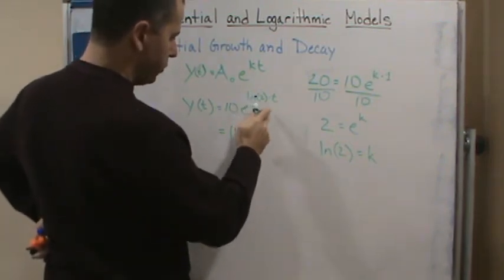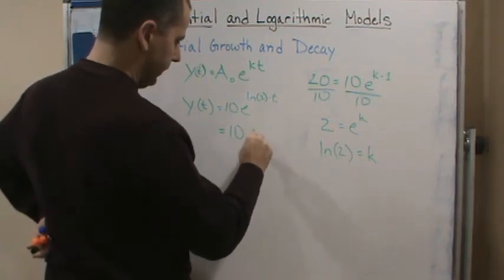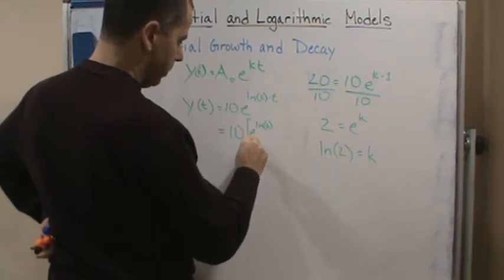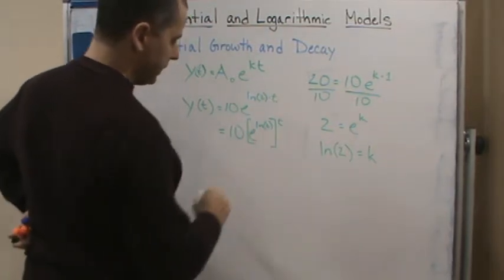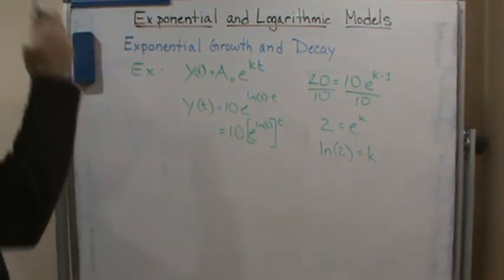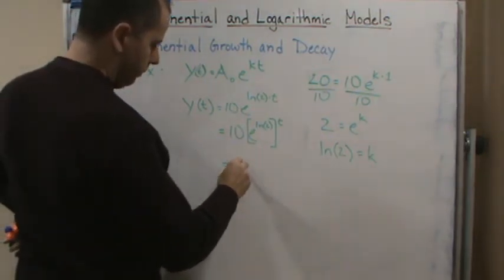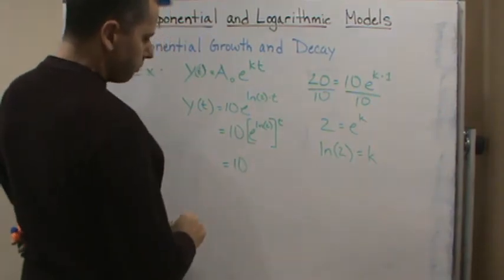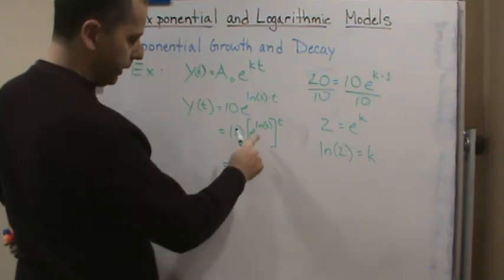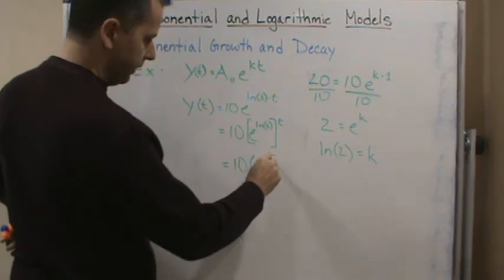And I'm going to write this as e to the t power, and this becomes ten. Well look at this, this is going to cancel using the inverse property. I'm going to get 2 to the t.